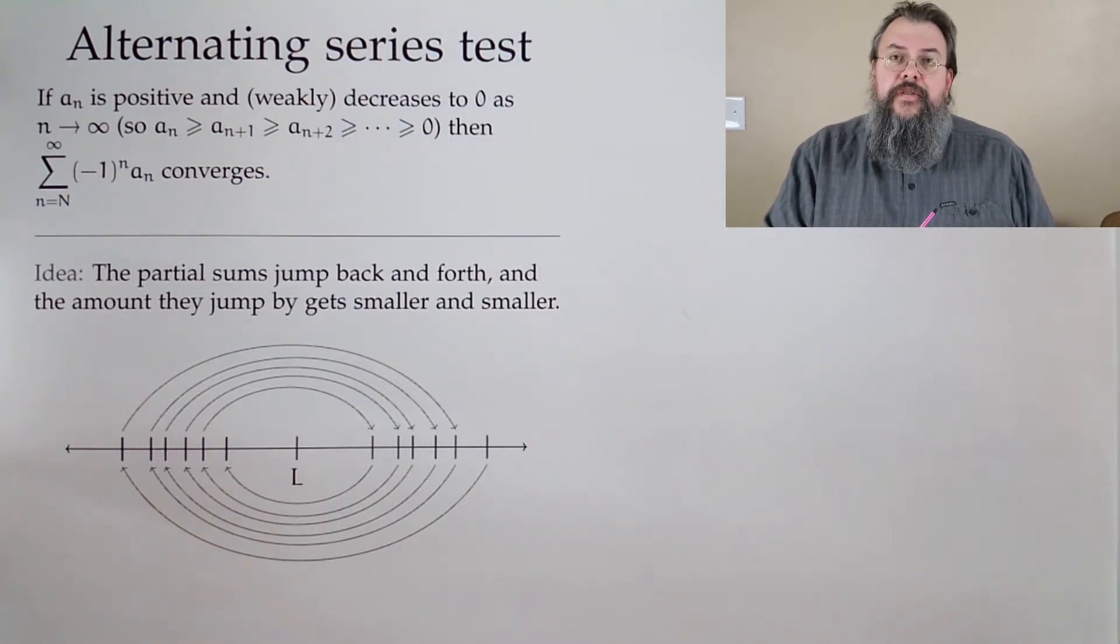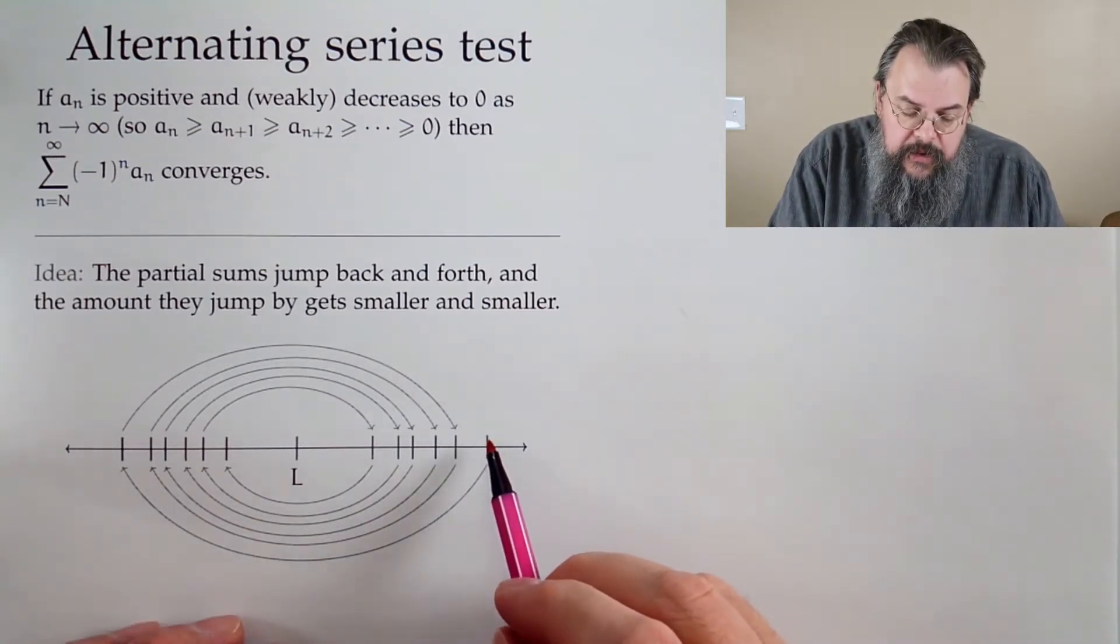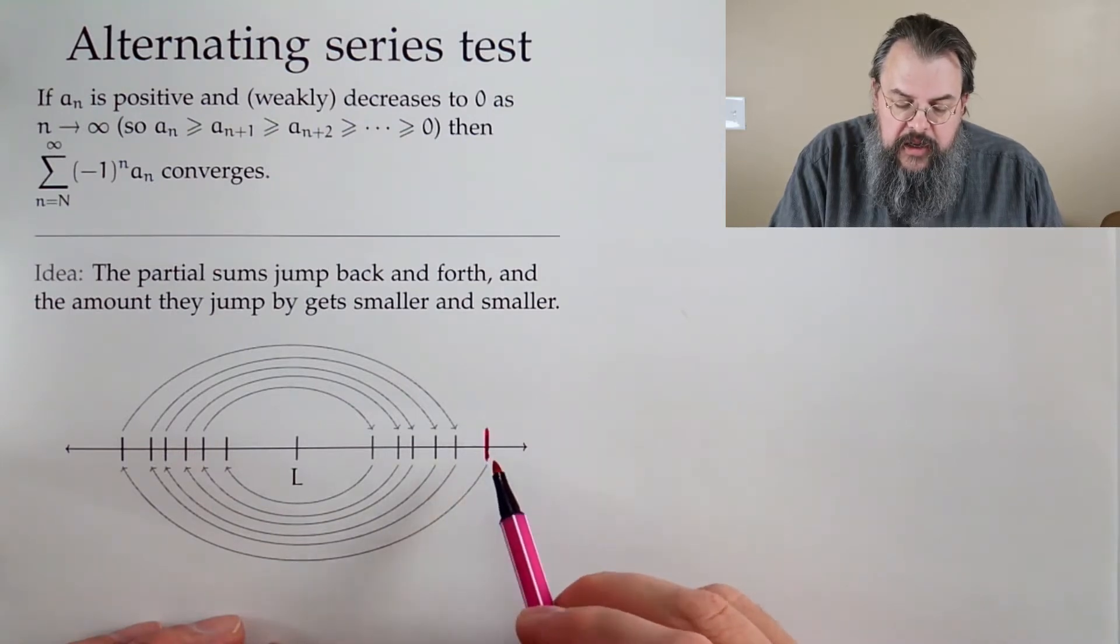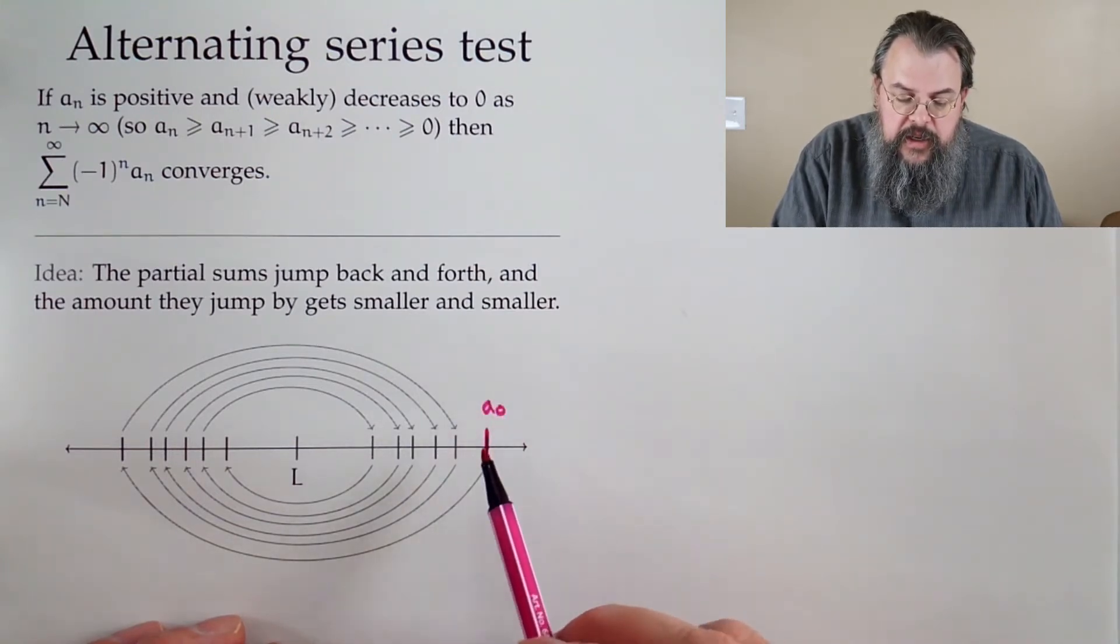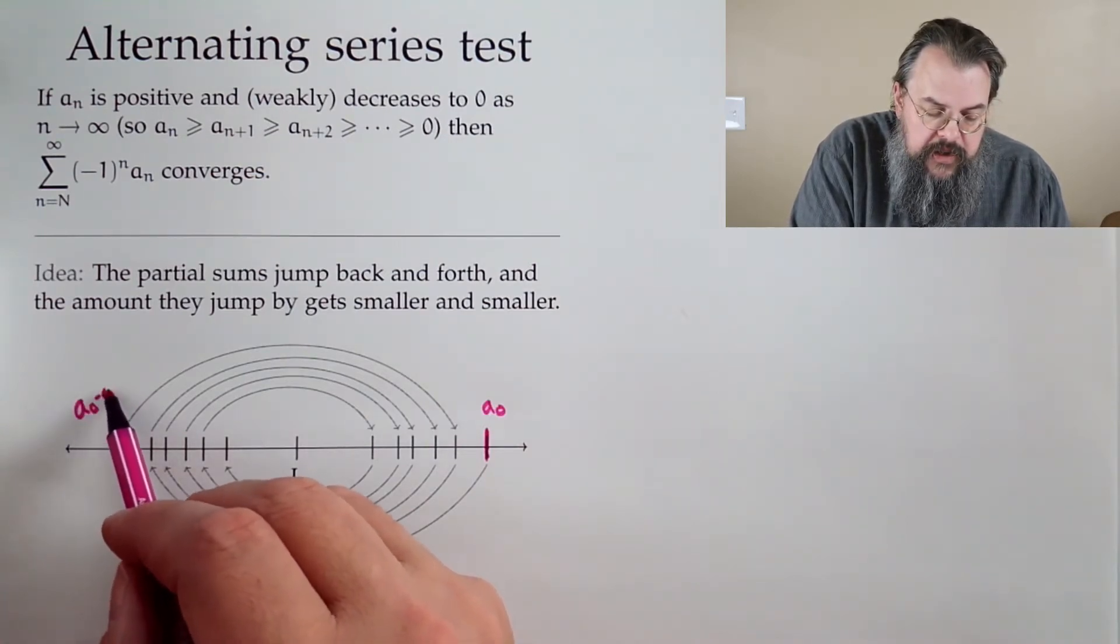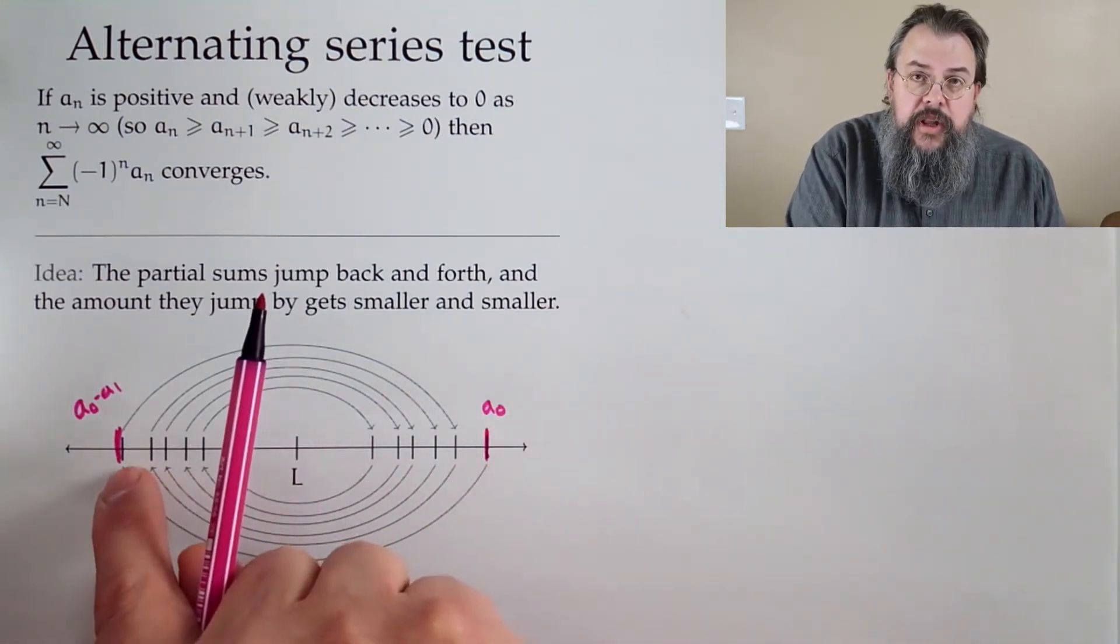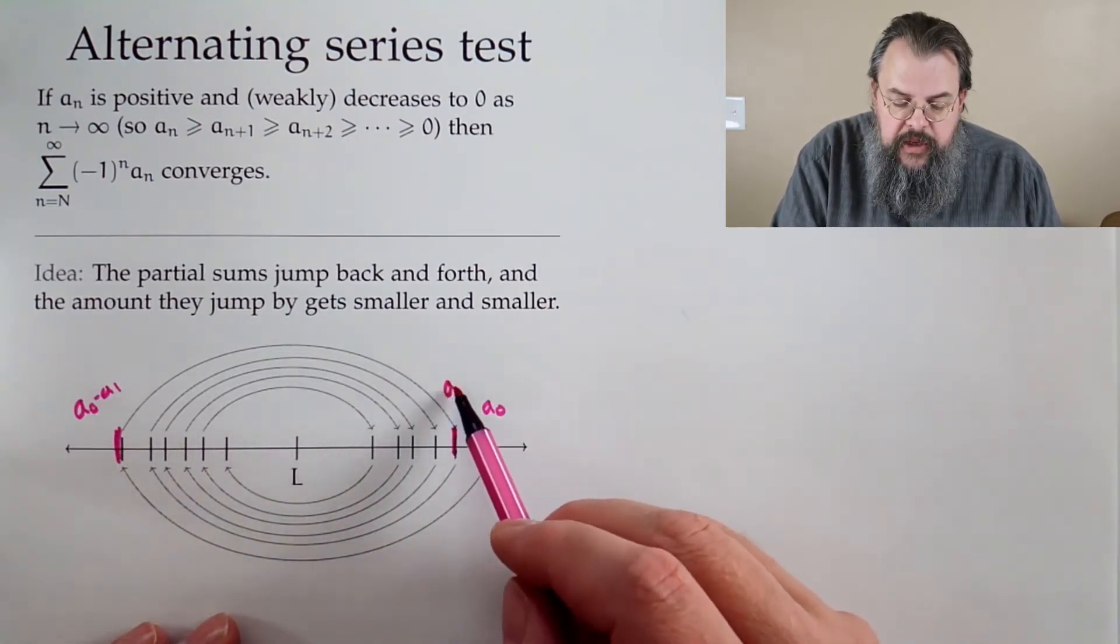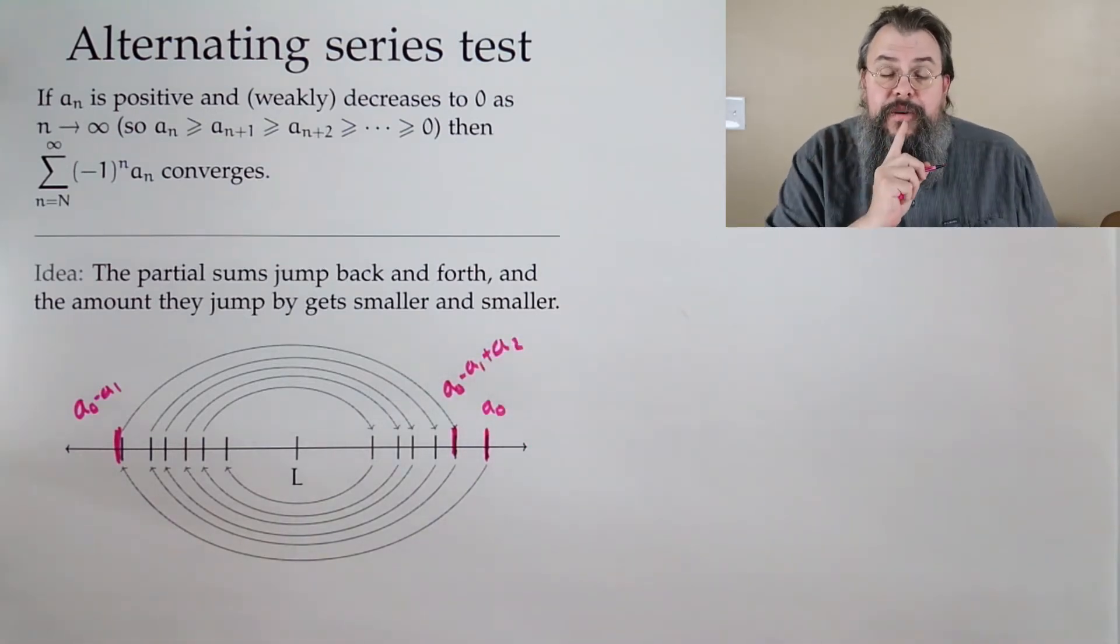Well, here's the basic philosophy. We can imagine we start at some value. This is our first term. And then we subtract. So, maybe this is like our a_0. Here, when we subtract, we'll have a_0 minus a_1. And then, because we subtract, we go to the left. Add, we go to the right. When we add, we're going to come back here. So, a_0 minus a_1 plus a_2.